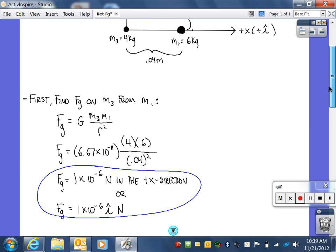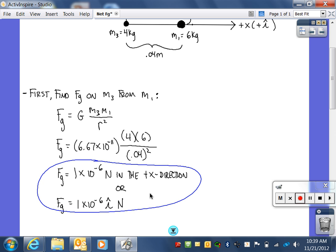The result of that math is 1 times 10 to the negative 6 newtons in the positive x direction. It's in the positive x direction because M3 is being pulled in the picture to the right by M1. In unit vector notation, this is 1 times 10 to the negative 6 newtons in the i direction.